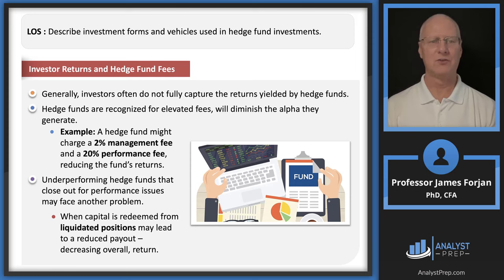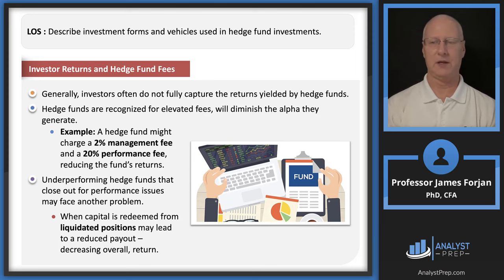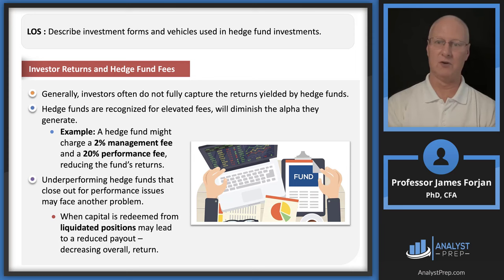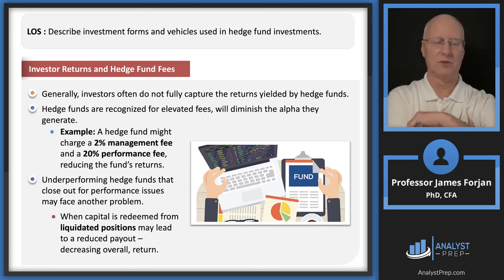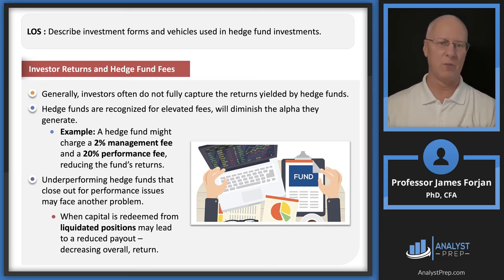On fee structure: typically a hedge fund charges 2% of assets under management. If you have $10 billion AUM and it grows to $13 billion, you pay 20% of that $3 billion performance gain. Hedge funds also have a high watermark — if the fund loses value, there's no performance fee until the fund gets back above that high watermark.